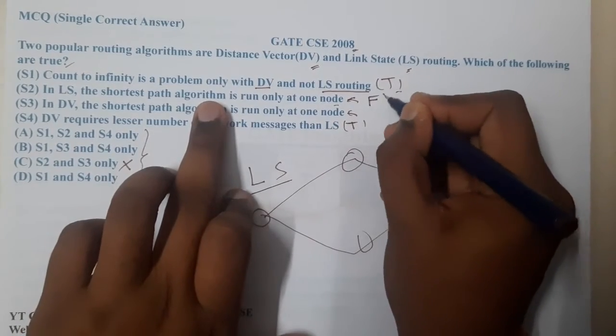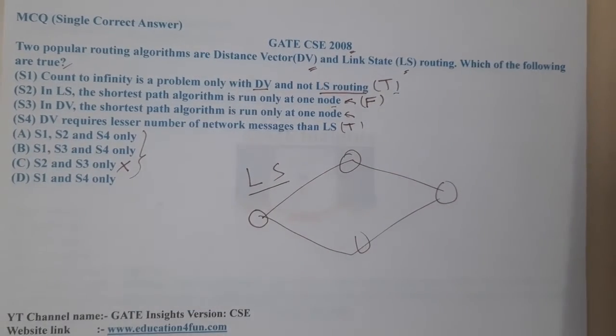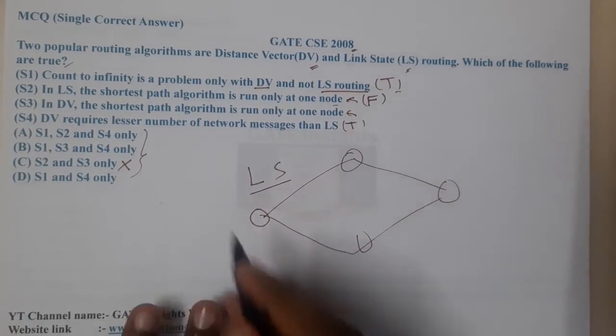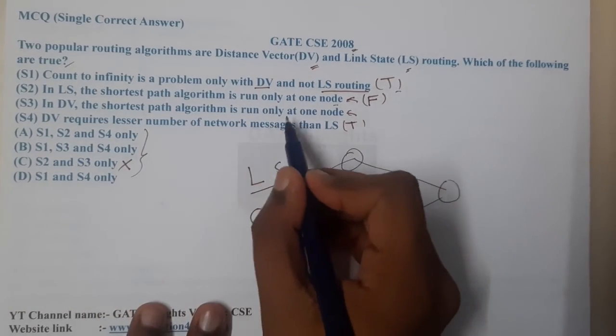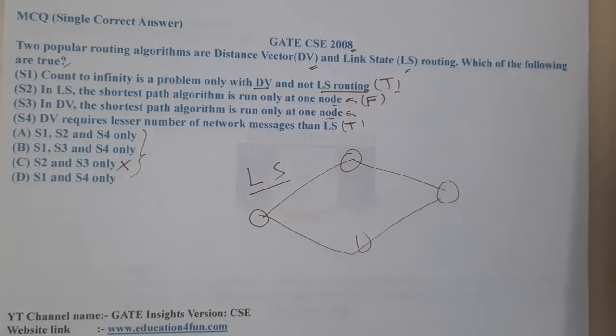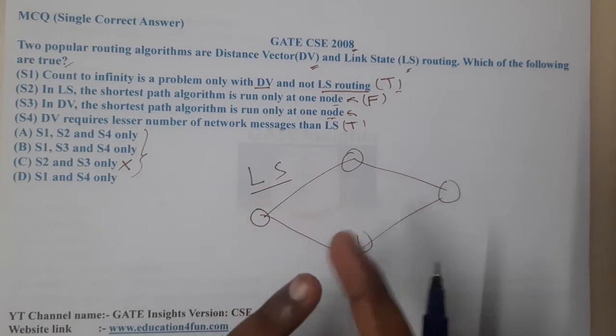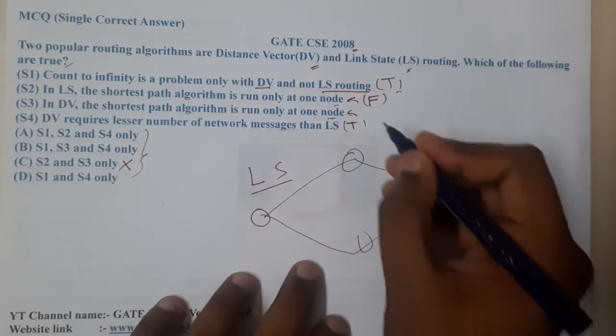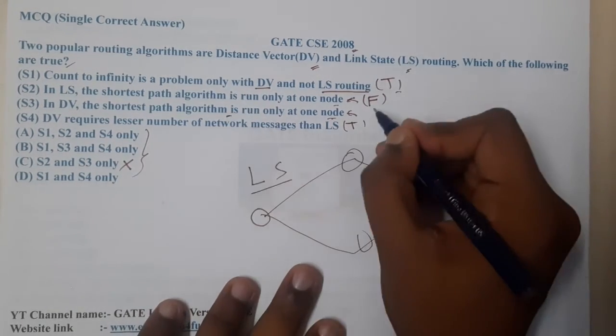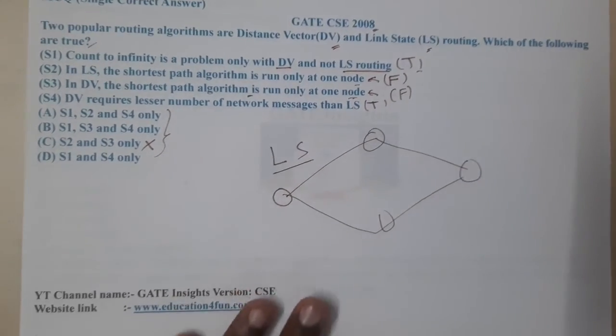Moving on to Distance Vector routing. In Distance Vector routing, the shortest path algorithm is run only at one node. To be clear, in Distance Vector routing, what do we use? We use the concept of initialization, sharing, and repeating. There is no concept of shortest path algorithm in it. So I can conclude that option is also false.